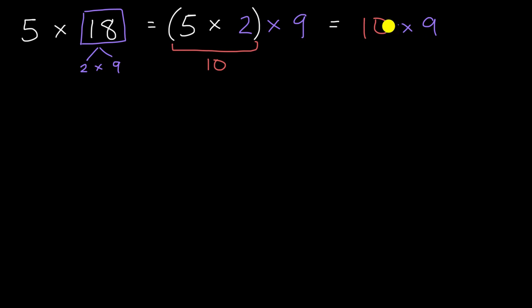Now, 10 × 9 is a lot more straightforward for most of us than 5 × 18. 10 × 9 is equal to 90. Let's do another example.